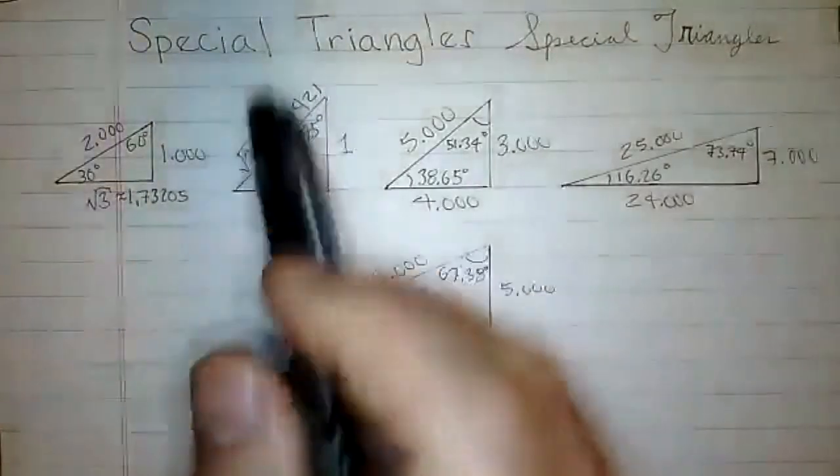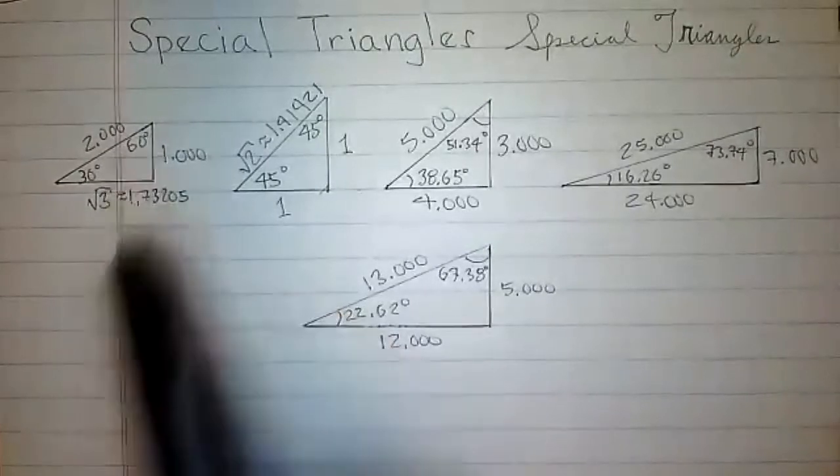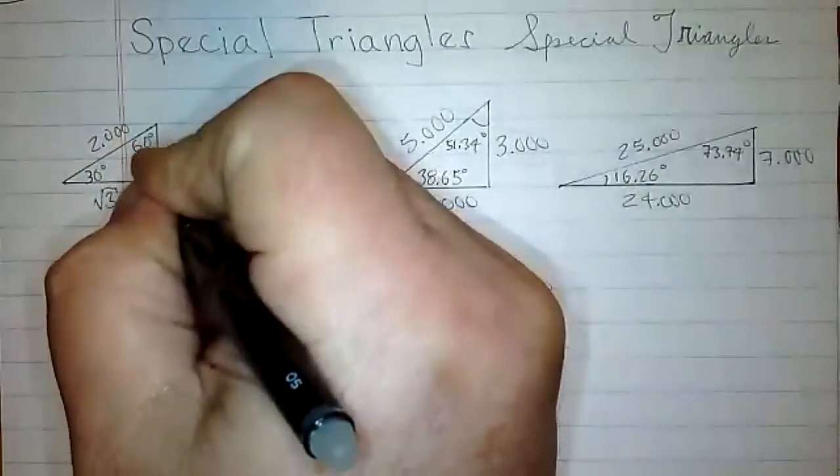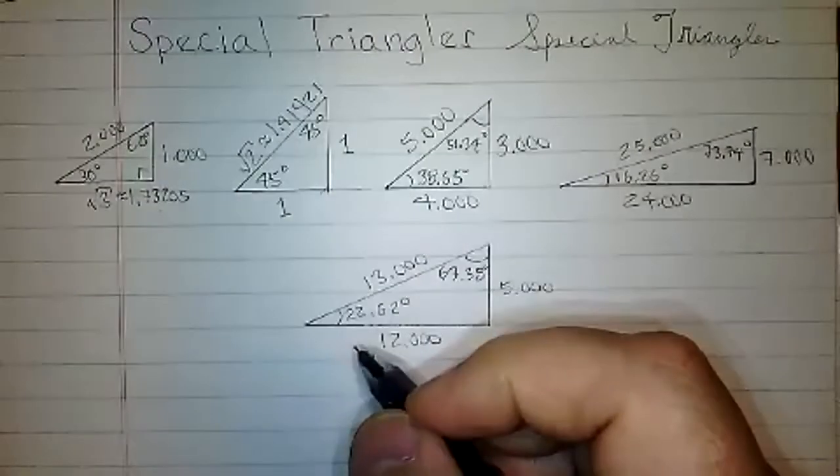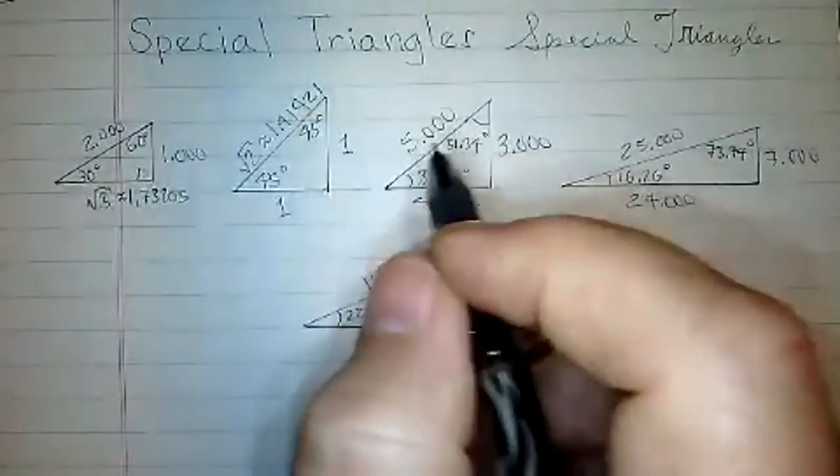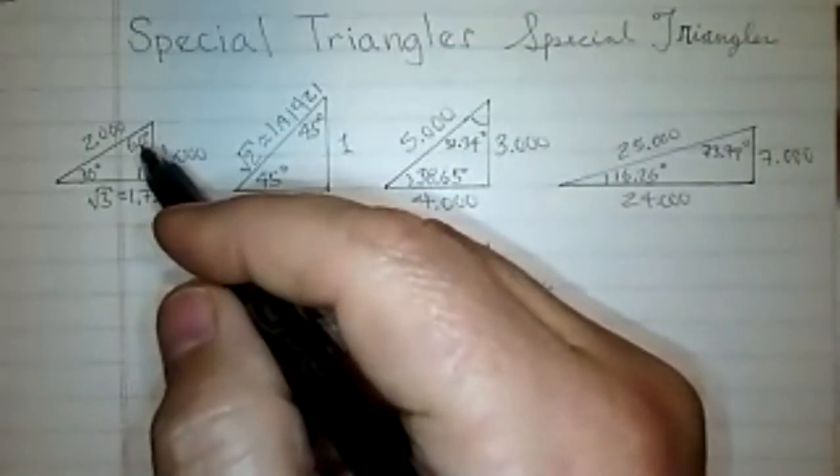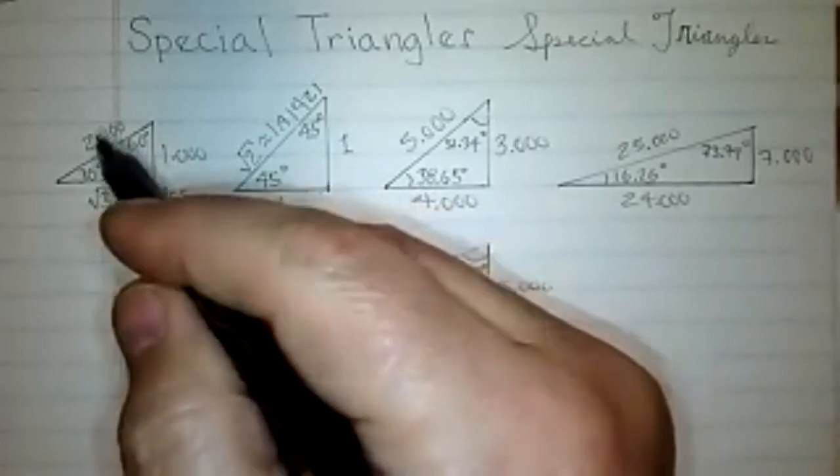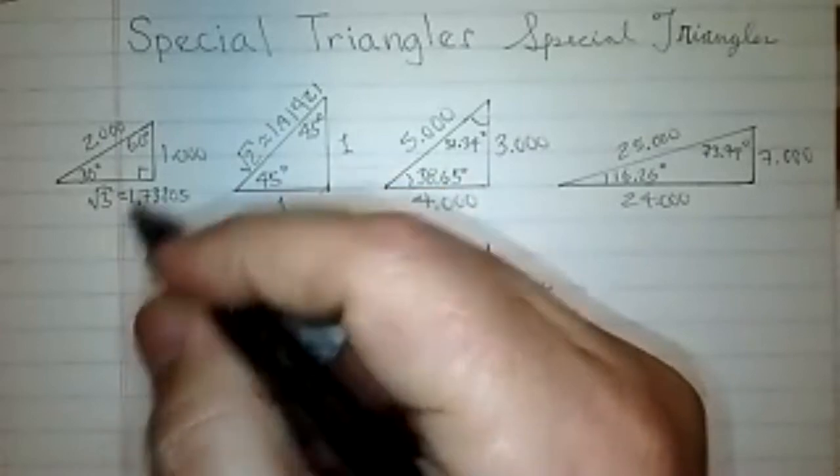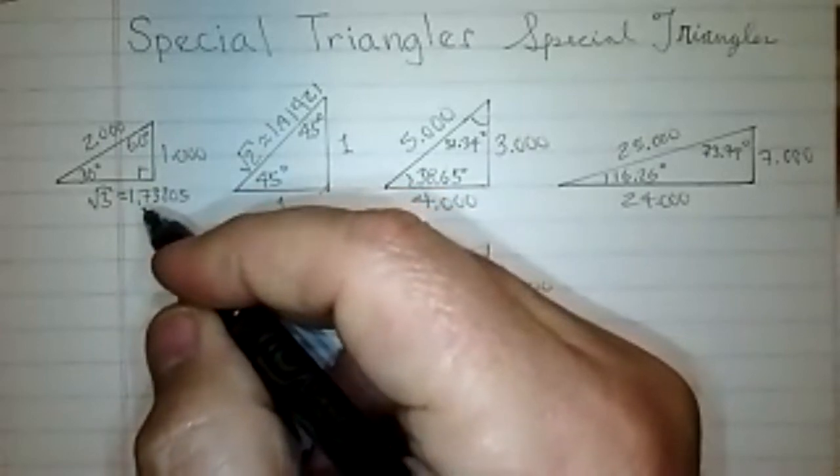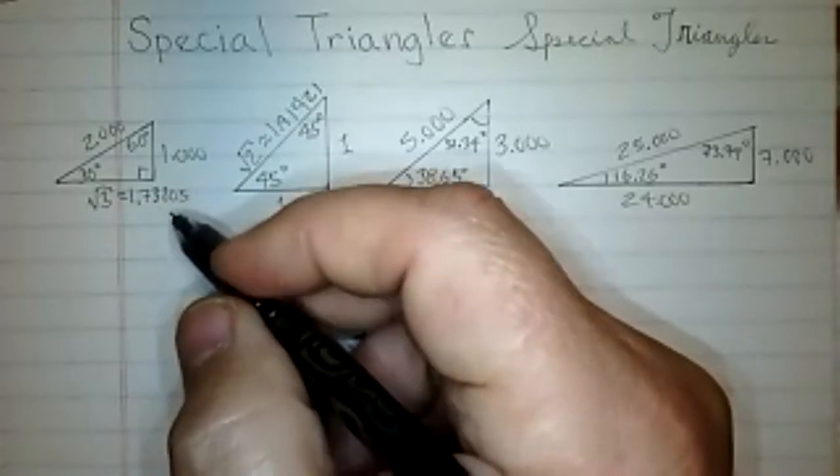So the first one is the 30, 60, 90 triangle. So you see 30 degrees, 60 degrees, and then of course this is 90. You can always specify it by putting that if you want, but I think it's obvious from here that these are. And I want to break it down into what the sides are. Remember, the biggest angle is always opposite the biggest side. That's why the 90 degree angle is always opposite the hypotenuse. In this case, 60 degrees is opposite square root of three. And because we're going to make use of it, the square root of three is 1.73205.